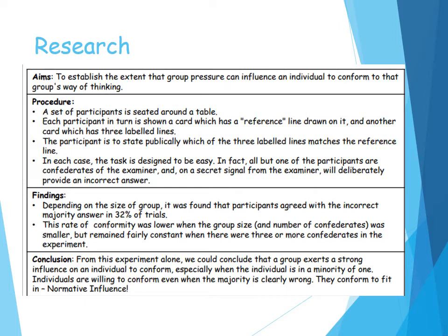A set of participants were all seated around a table. Each participant was shown a card with a reference line drawn on it and another card with three labelled lines. The participants had to state out loud, publicly, which of the three labelled lines matched the reference line. In each case, the task was designed to be easy. In fact, all but one of the participants are confederates, and they would deliberately give the wrong answer.